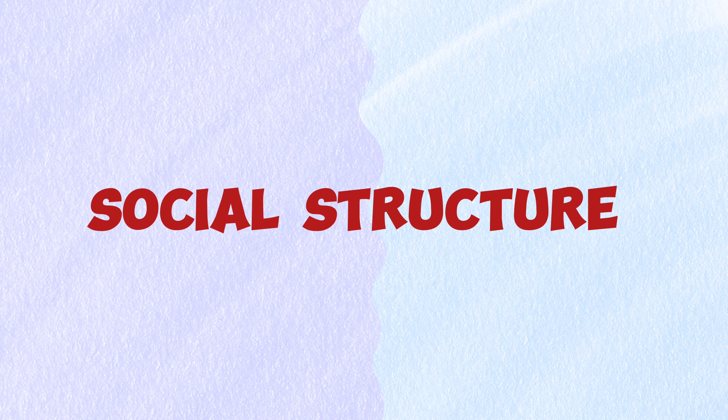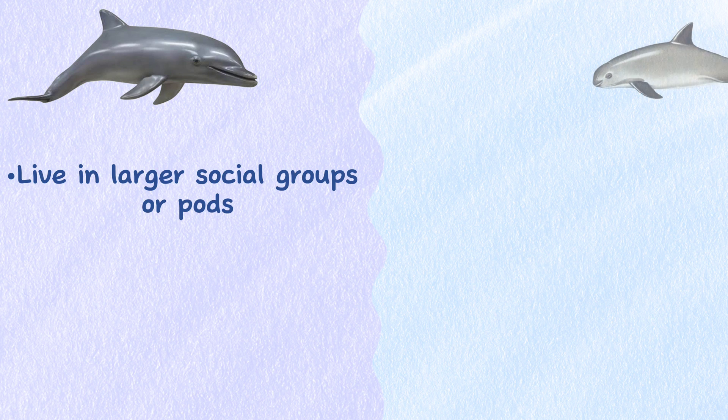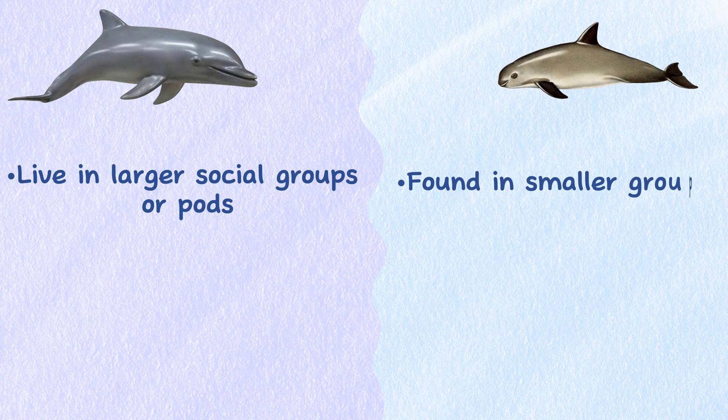Social structure. Dolphins tend to live in larger social groups, or pods, while porpoises are usually found in smaller groups or alone.